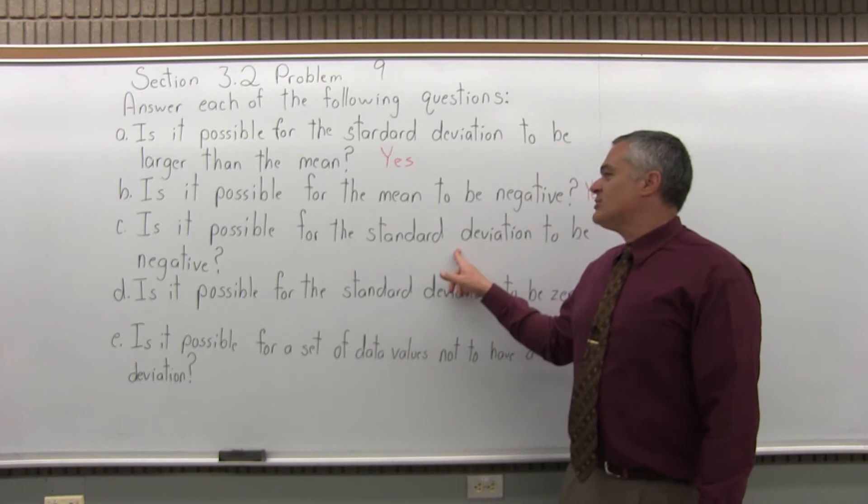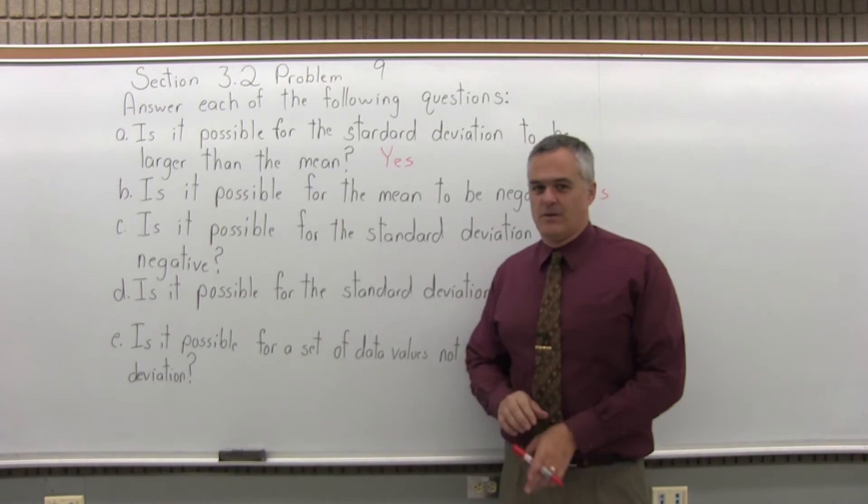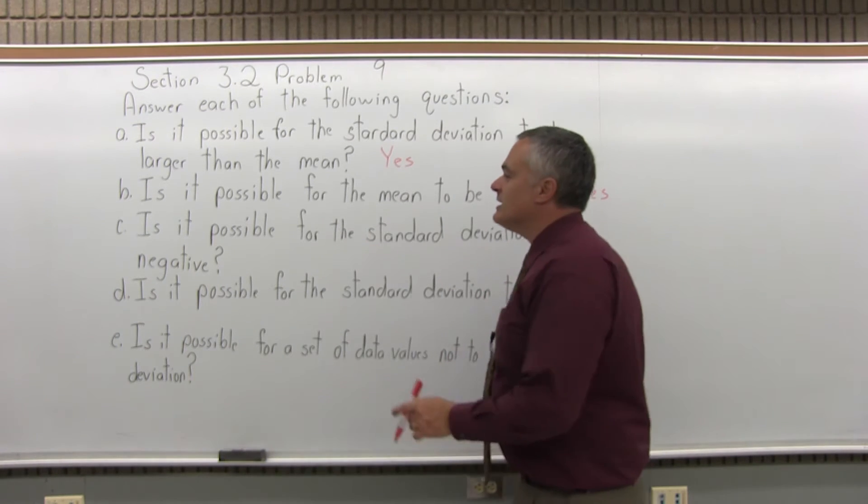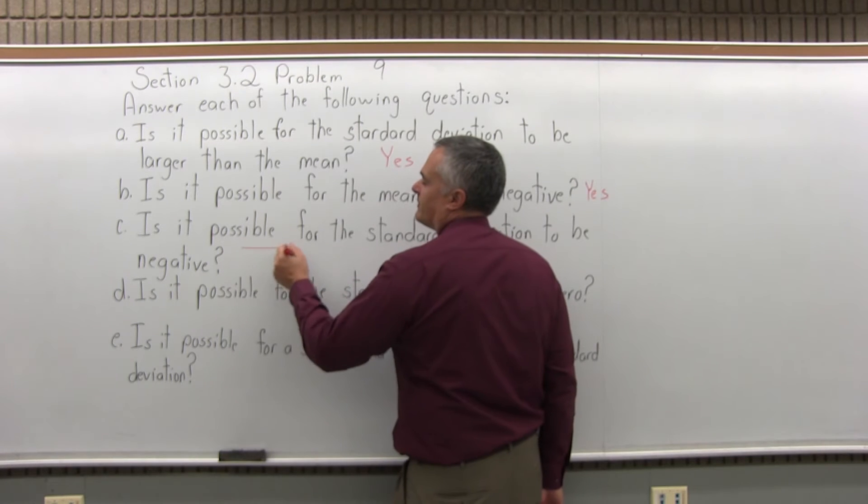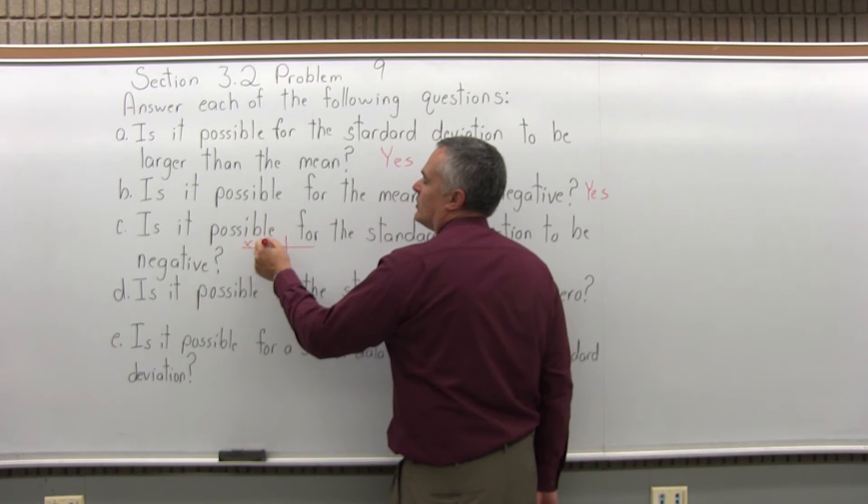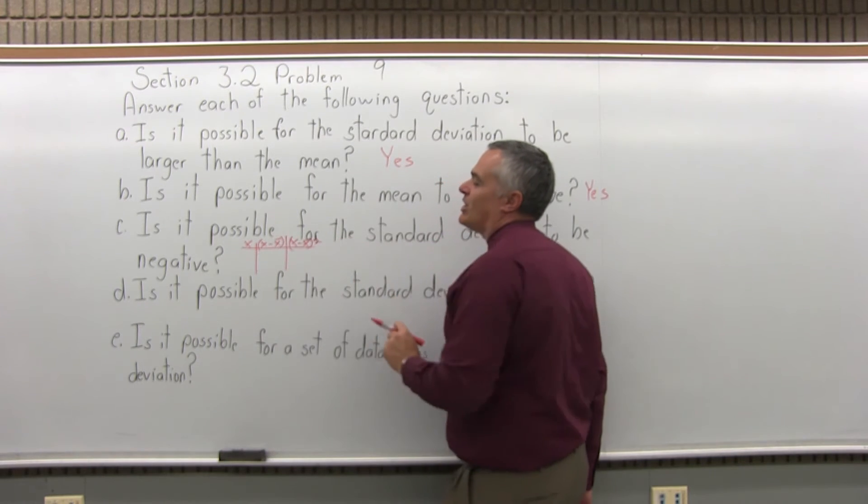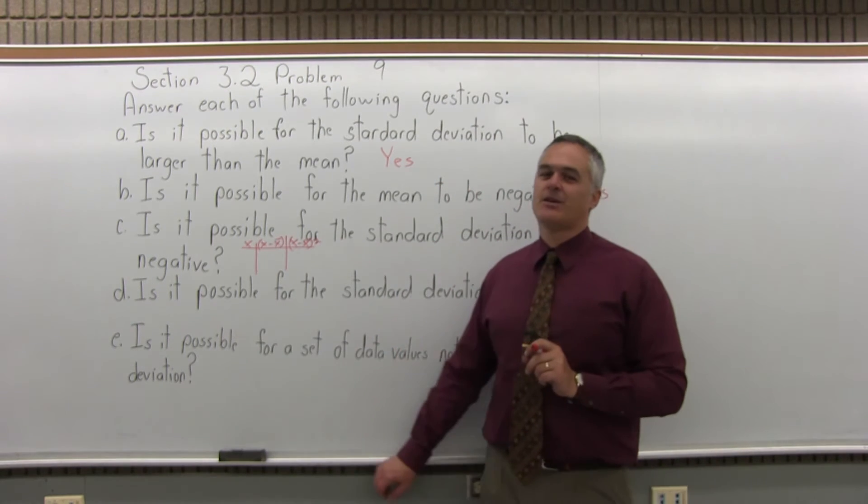Is it possible for the standard deviation to be negative though? What would that mean? Well, the answer is no. If you think about it, when you get the standard deviation, you have to find the variance which part of the variance is filling out that chart with the three columns. And since one of the columns involved has a second power,